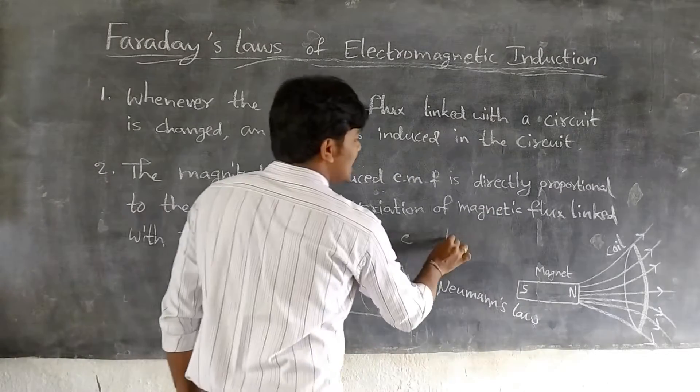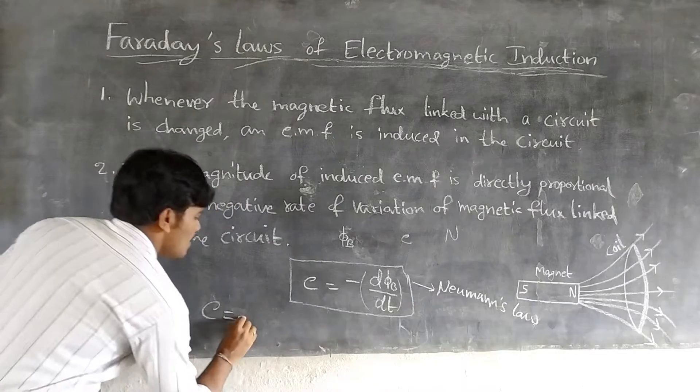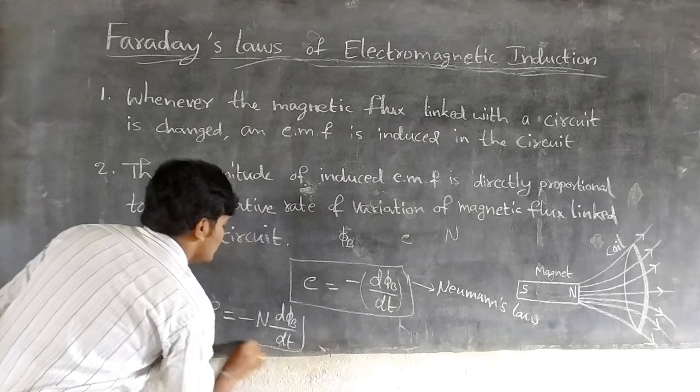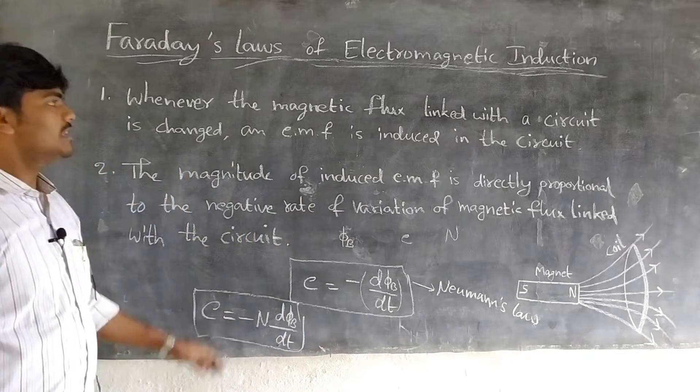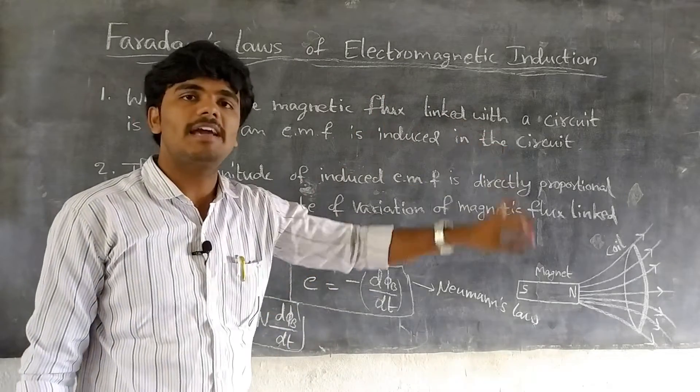If there are N turns in the coil, we can write E is equal to minus N d(phi B) by dt. So these are the two laws of Faraday regarding electromagnetic induction.